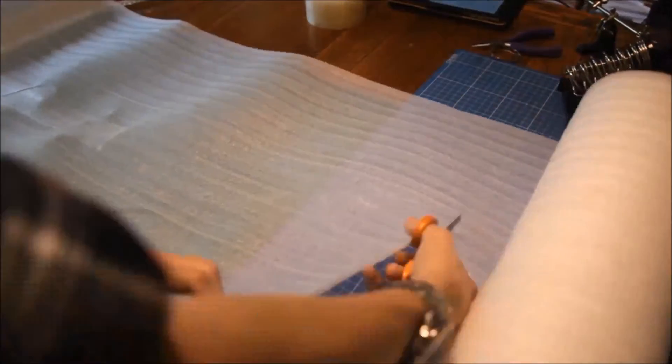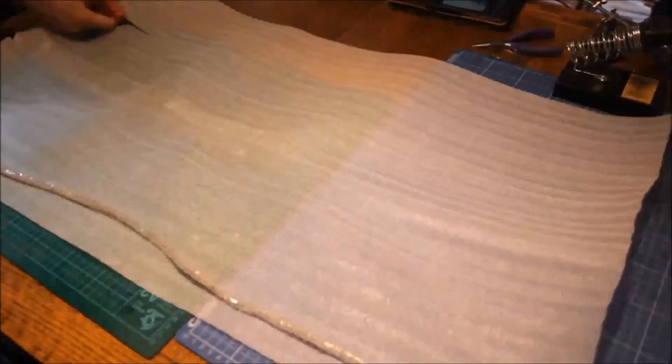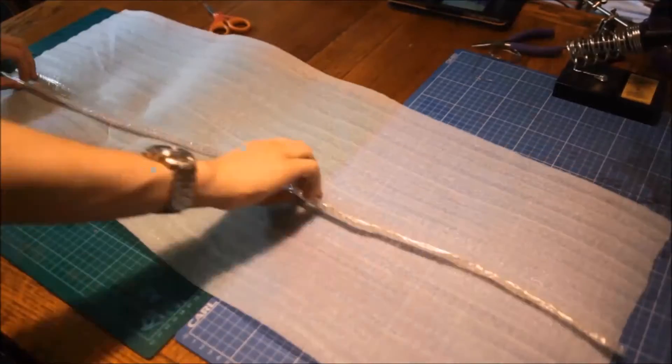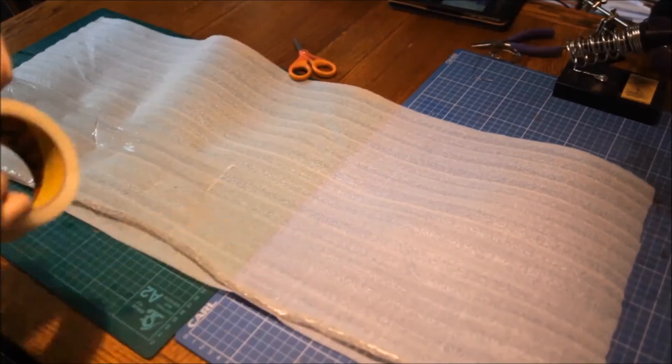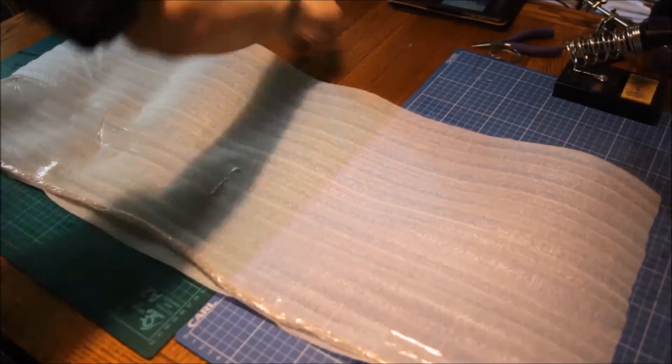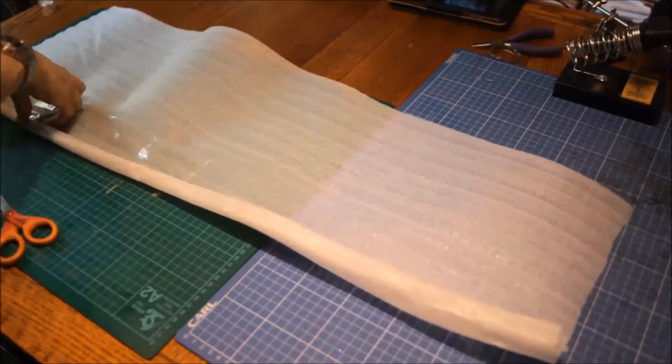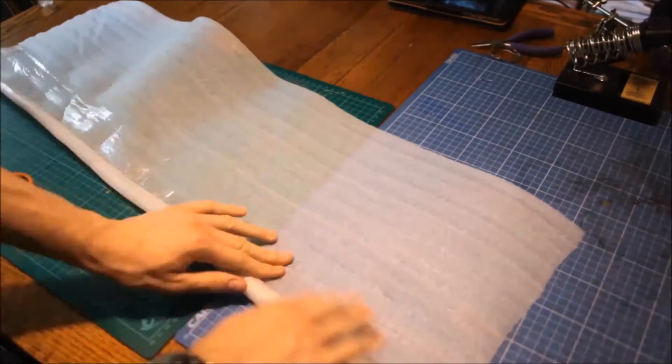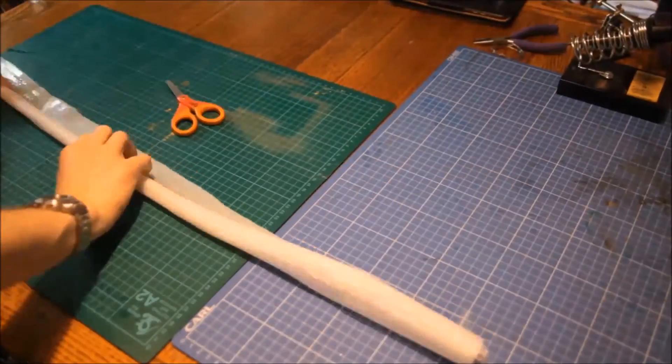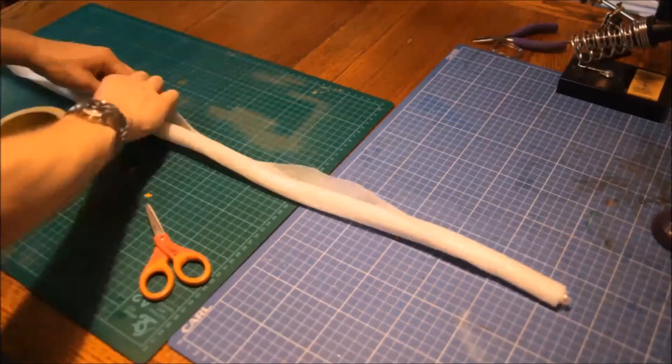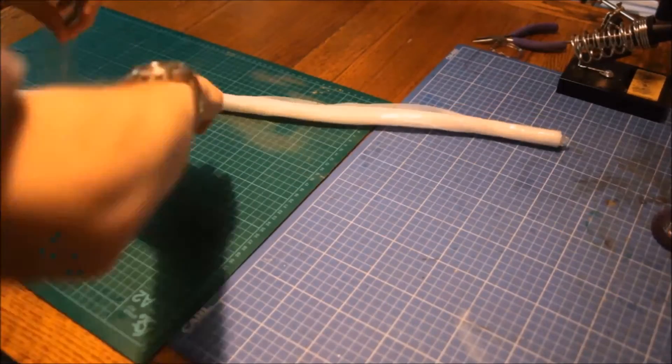Next I'm using some packing foam to diffuse the LEDs a bit more and add more protection to the string. I found that about half the width of the roll was enough to wrap it up and not make it too thick so that it wouldn't fit inside the lightsaber blade. Then wrap more of the packing tape around there to keep it all shut.